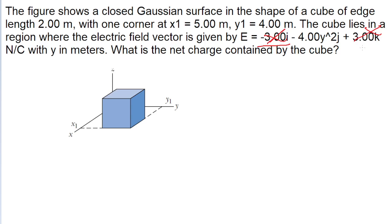The same logic applies to the 3k. So the only term of this electric field equation that we're going to focus on is the negative 4y squared, which has the j-hat, meaning it's pointing in the y direction. That term is not constant because it's being multiplied by the square of the current y coordinate, so that term is changing, which means it's totally possible for that term to have more field coming in than coming out, or vice versa — meaning there could be a contribution to flux there.